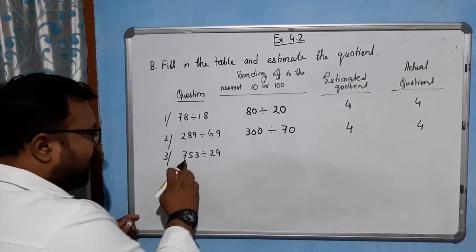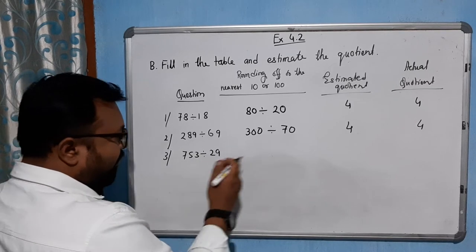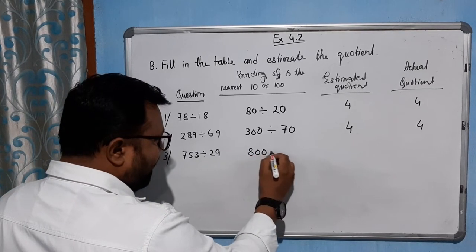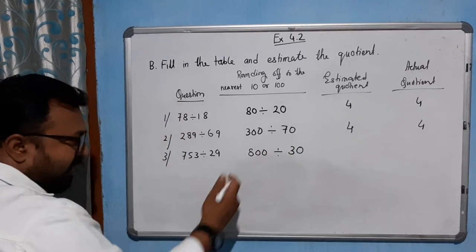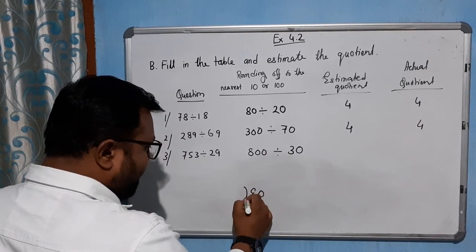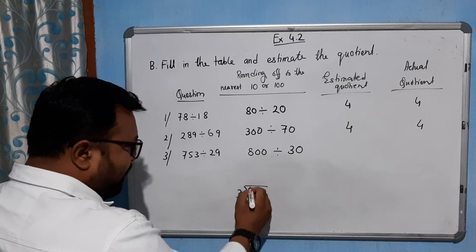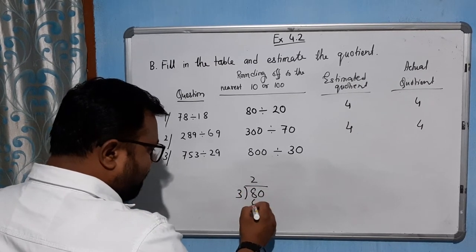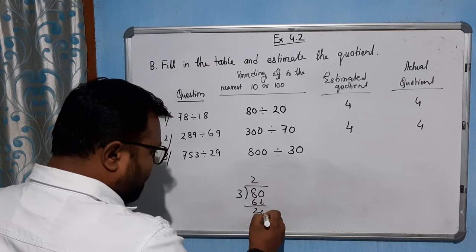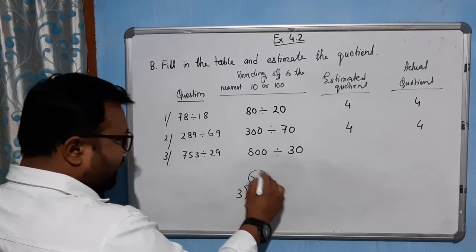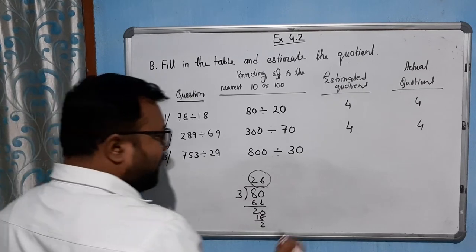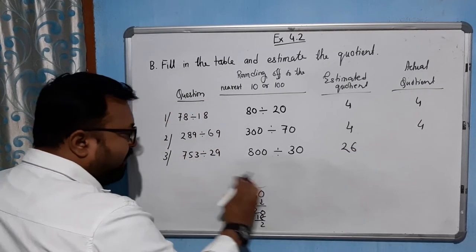753 will be rounded up to 800, and 29 rounds to 30. The zeros cancel, so we can clearly see 80 divided by 3. 3 times 26 is 78, remainder 2. So our estimated quotient is 26.